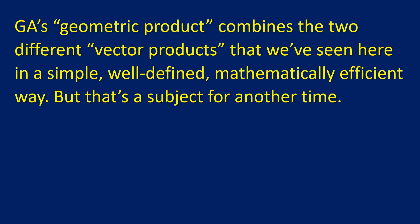Now, in geometric algebra, one of GA's distinguishing features is what's called the geometric product. Among other things, it combines the two different vector products that we've just seen, the one involving work and the one involving torque, in a simple, well-defined and mathematically efficient way. But that's a subject for another time.